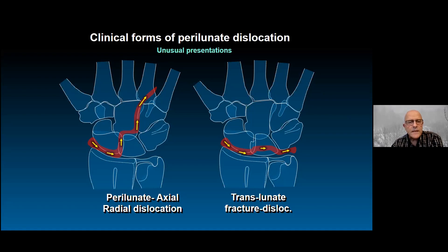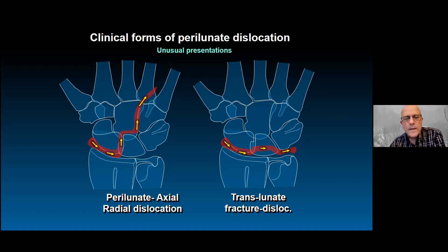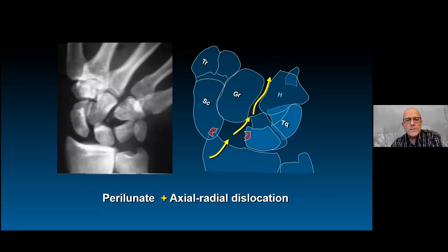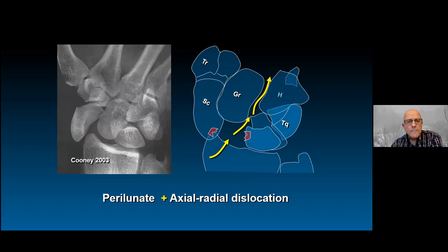Another uncommon variant is when the lunate itself is disrupted — a translunate fracture dislocation. As Dr. Greg Bain from Australia described, this would be a perilunate axial-radial dislocation variant, with the capitate sliding relative to the hamate together with the scaphoid on the radial side. Bill Cooney also published cases where the capitate, trapezoid, trapezium, and scaphoid all migrate proximally together while the lunate and ulnar carpus remain unstable.